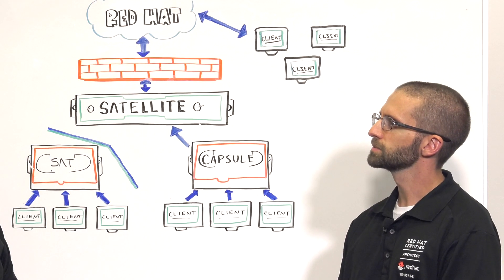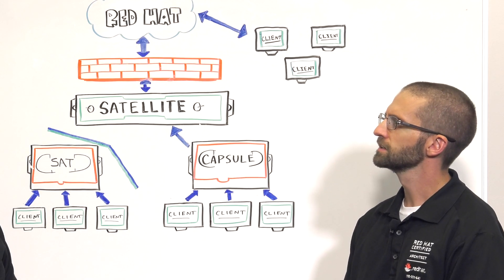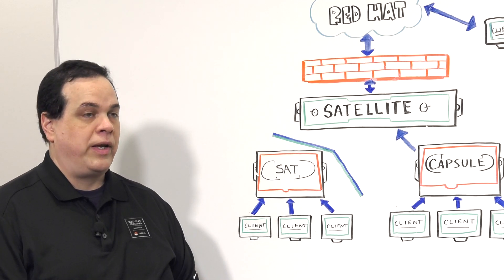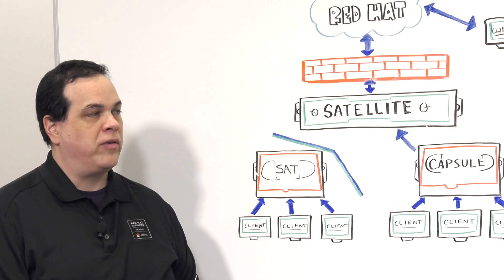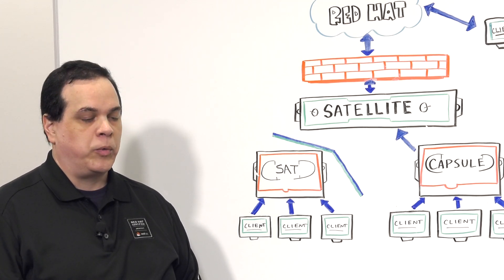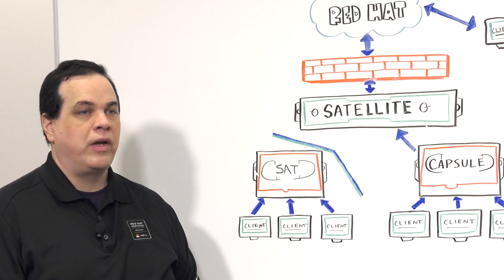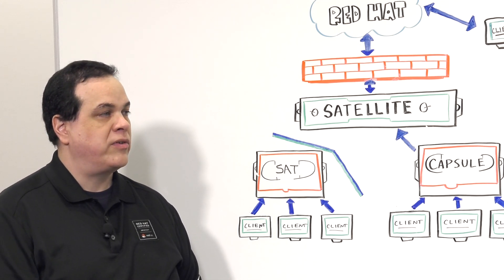Satellite is able to support clients provisioned a number of ways. Will those systems be supported in Insights? The Insights client runs on Red Hat Enterprise Linux 6.4 and above and 7. It will also run on physical systems, on virtual systems, and on containers. Insights can run on your on-premise systems or in the cloud.